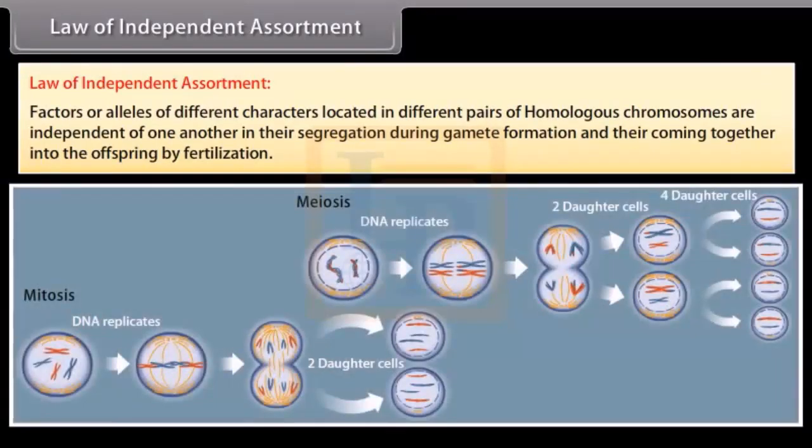Factors or alleles of different characters located in different pairs of homologous chromosomes are independent of one another in their segregation during gamete formation and they are coming together into the offspring by fertilization.